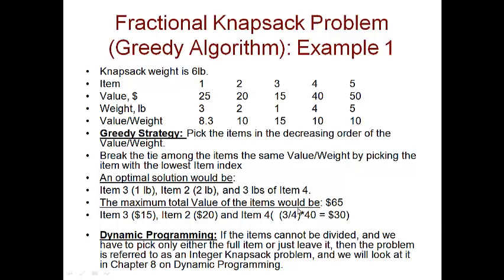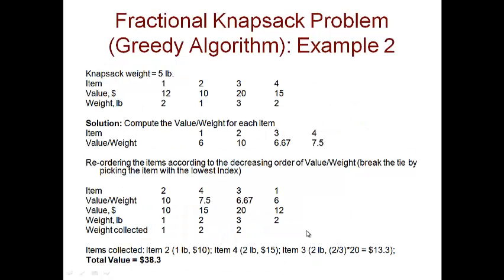Here's another example with 4 items. The values and weights are given and the knapsack capacity is 5 pounds. We compute value per weight: 12/2 = 6, 10/1 = 10, 20/3 = 6.67, and 15/2 = 7.5. We pick the item with the largest value per weight, which is item 2 at 10.